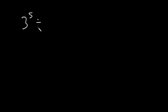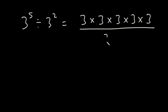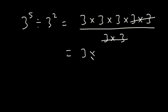How can you divide 3 exponent 5 by 3 exponent 2? 3 exponent 5 means we multiply 3 five times, so it is 3 times 3 times 3 times 3 times 3, divided by 3 times 3, because we have 3 exponent 2. These 3's are going to cancel those 3's, leaving us with 3 times 3 times 3 times 3.